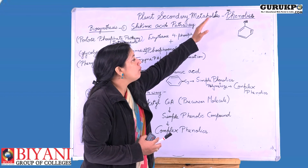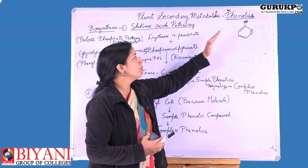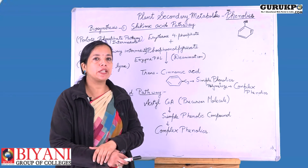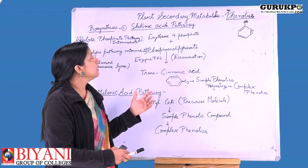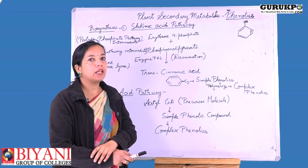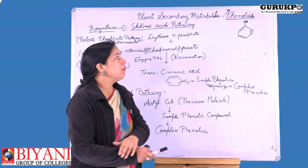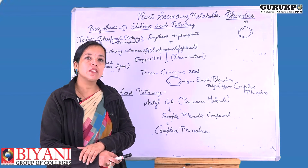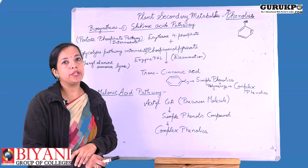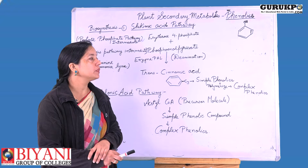Phenolics are a type of plant secondary metabolites derived from the phenol group. They are derived from aromatic amino acids like phenylalanine, tyrosine, and tryptophan. These phenolics contain a benzene ring and hydroxyl substituent groups, and they are well known for their antioxidant property.